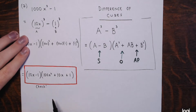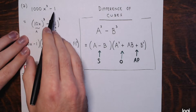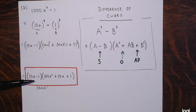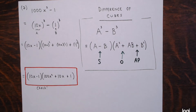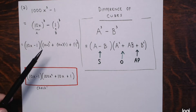Don't forget to check your work. Multiply these two — distribute the 10x, distribute the negative 1, combine like terms — and you should end up with 1000x cubed minus 1. Or you could pick different values of x. If these are truly equal, no matter what you plug in for x you should get the same number. For instance, if you were to plug in 1 for x, both expressions would give a value of 999.